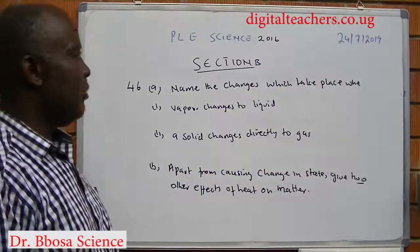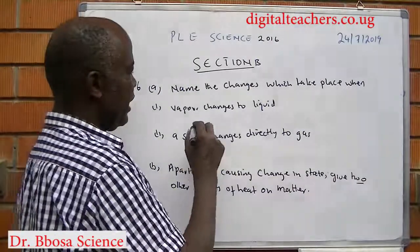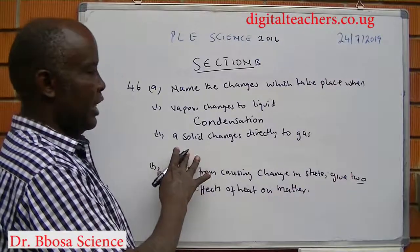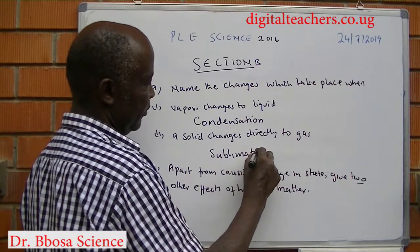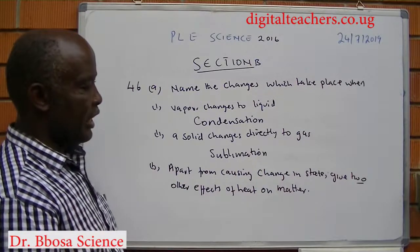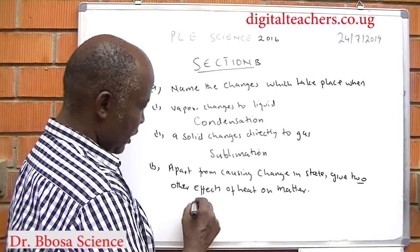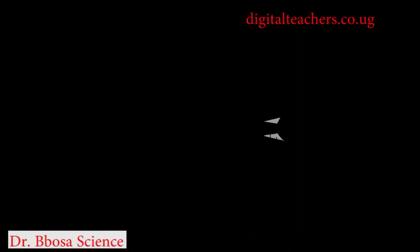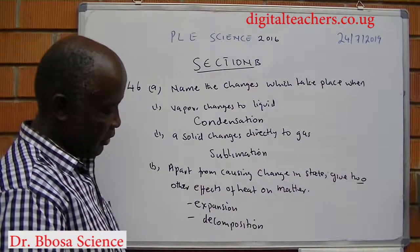Number 46A: name the change which takes place when water vapor changes to liquid — that is condensation. When a solid changes directly to a gas — that is sublimation. Apart from causing change in state, give two other effects of heat on matter: it may cause expansion and it may cause decomposition.